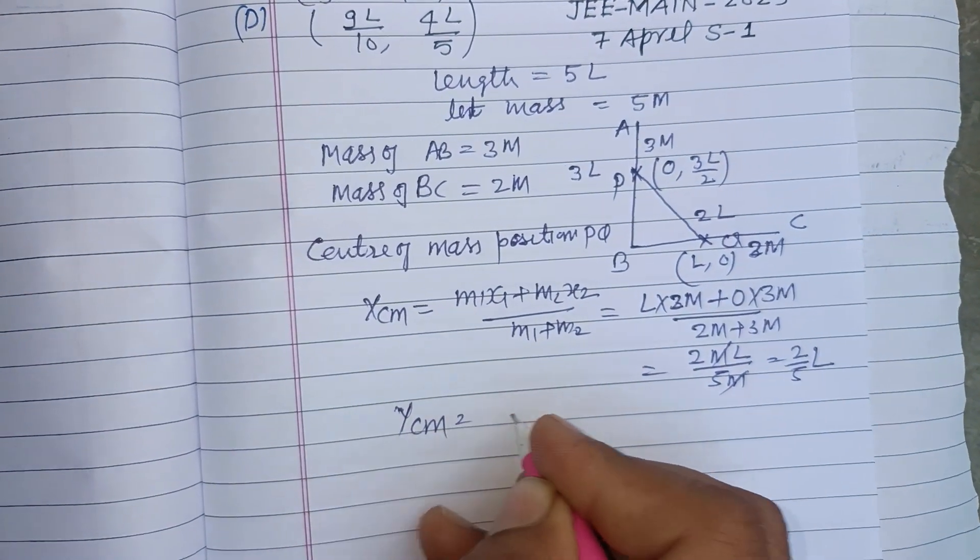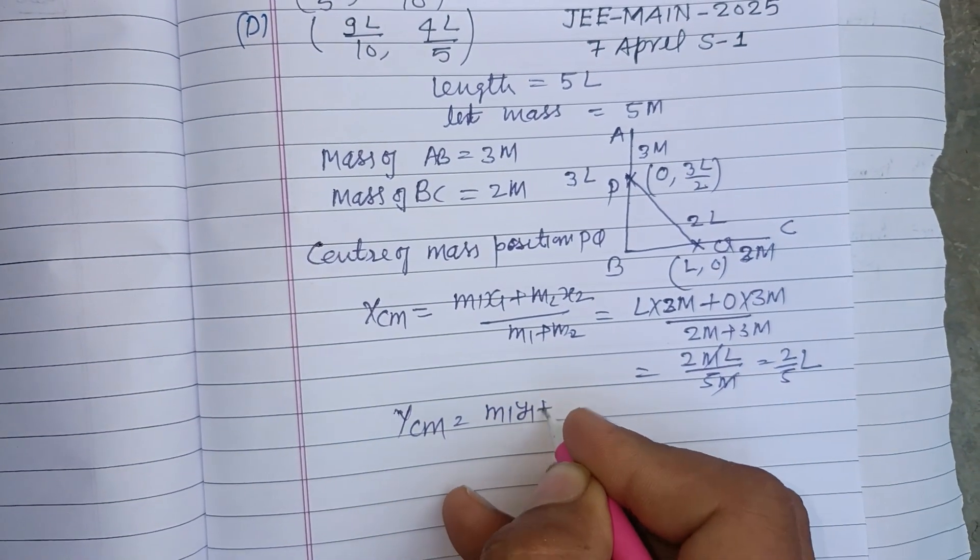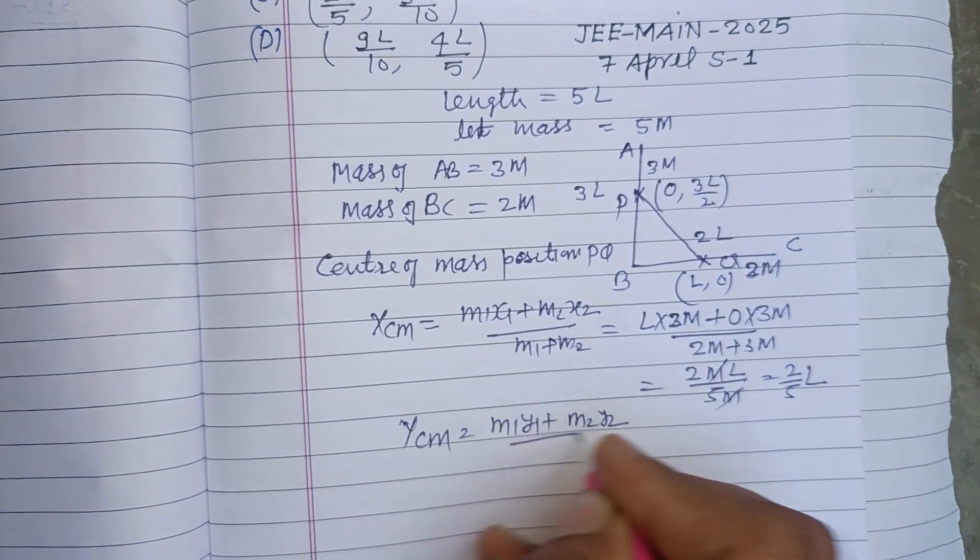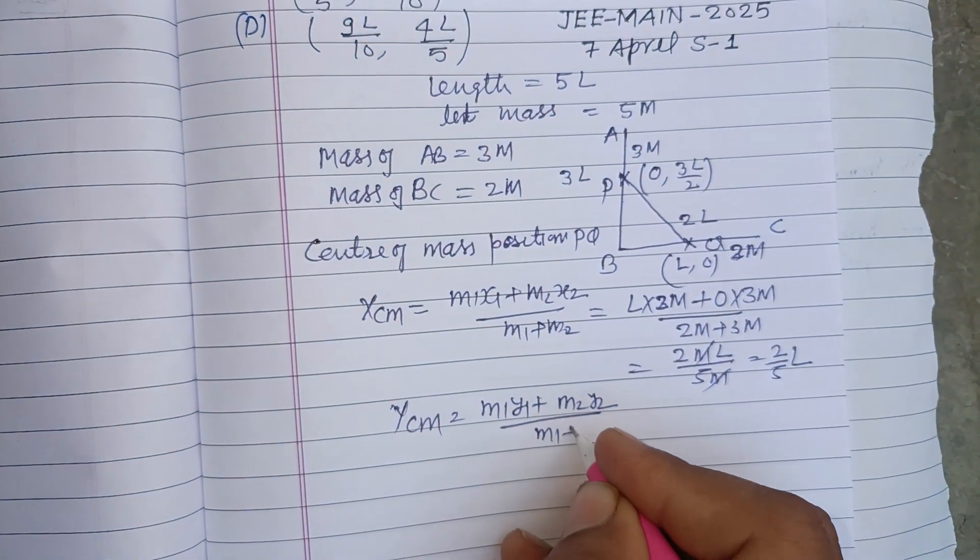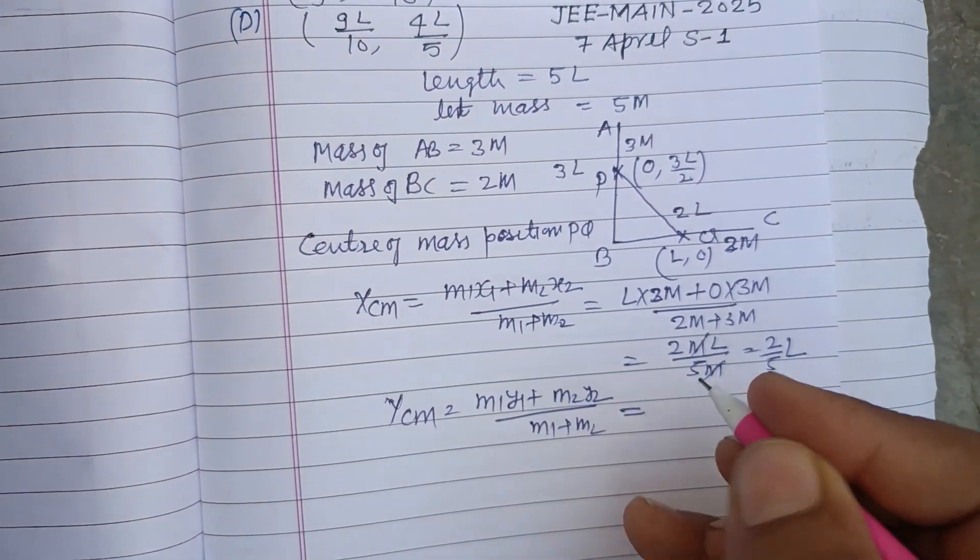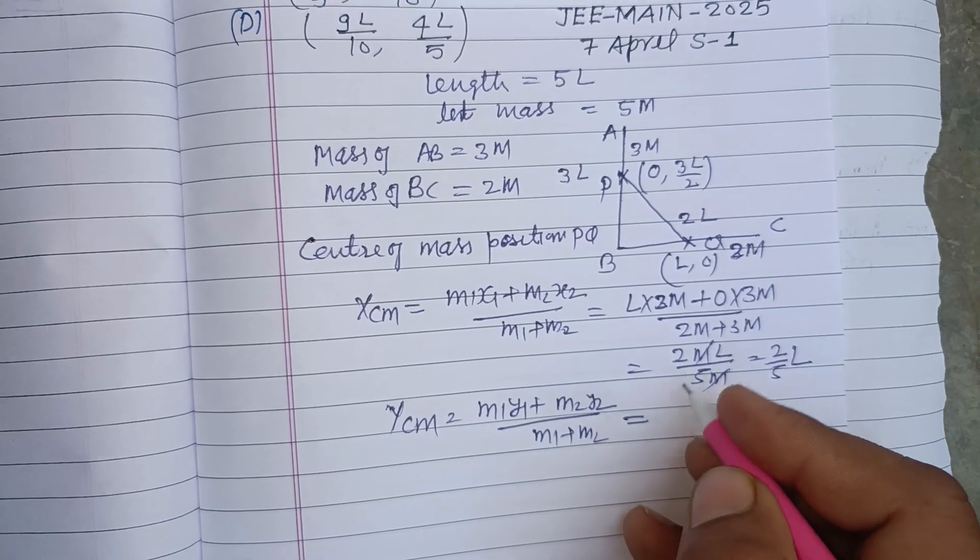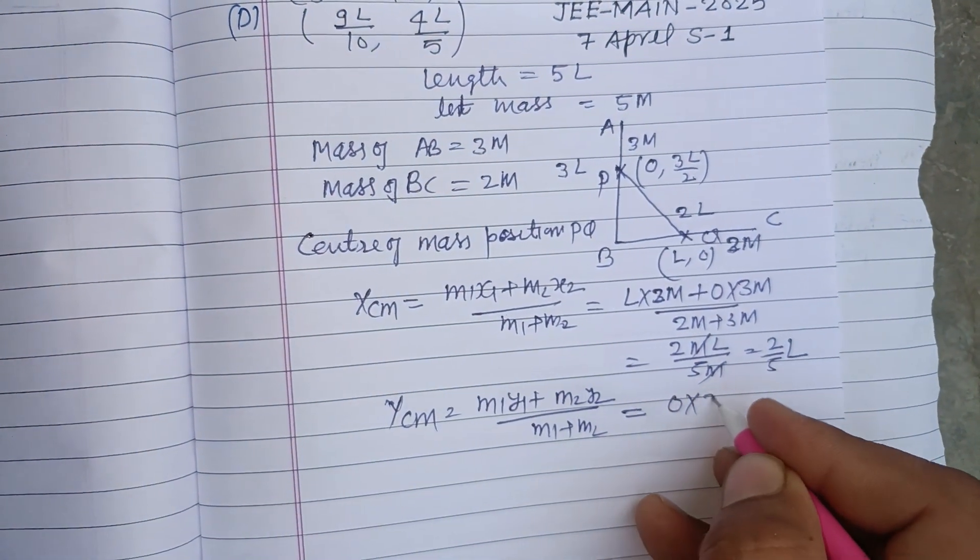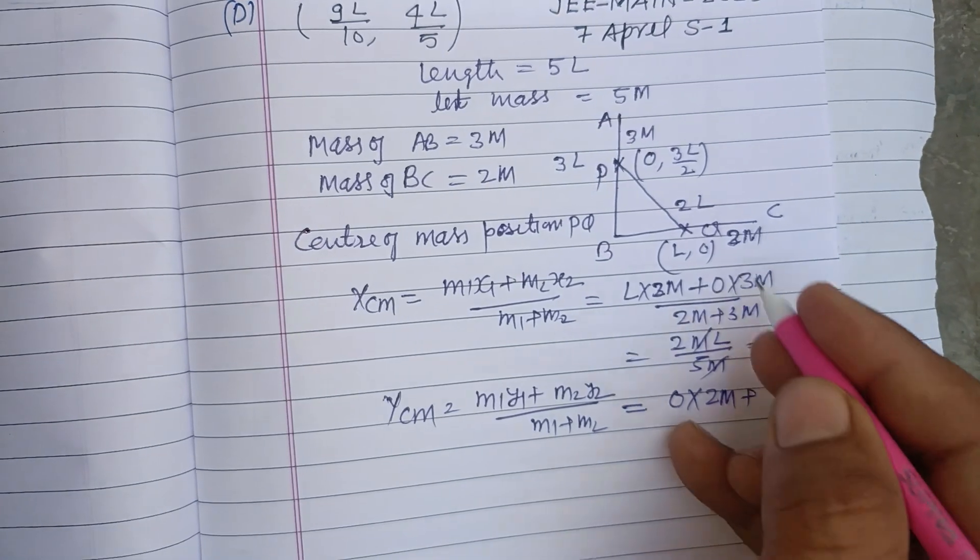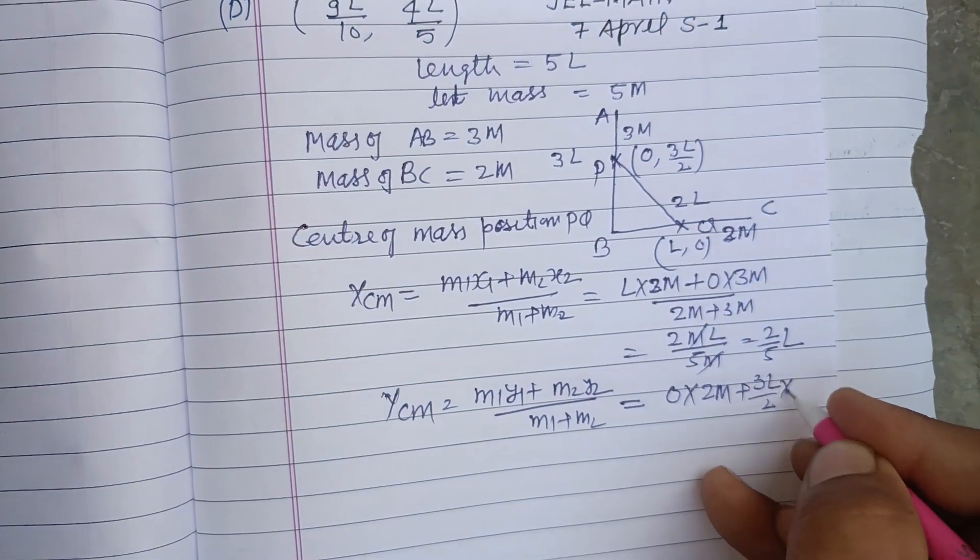And Y center of mass equals m1 y1 plus m2 y2 upon m1 plus m2. Using the formula, so m1 is here 0 into 2M, m2 is here 3L by 2 into 3M.